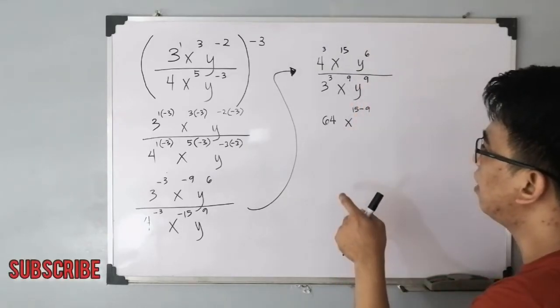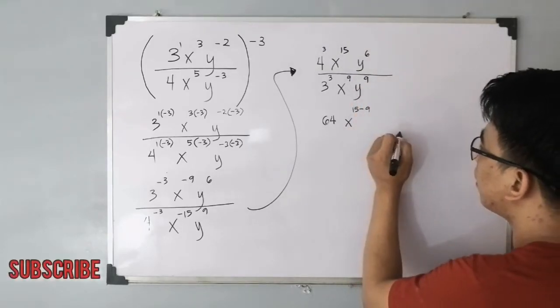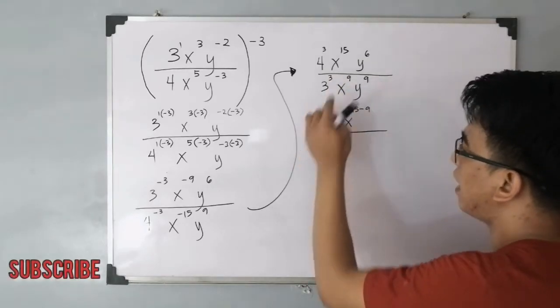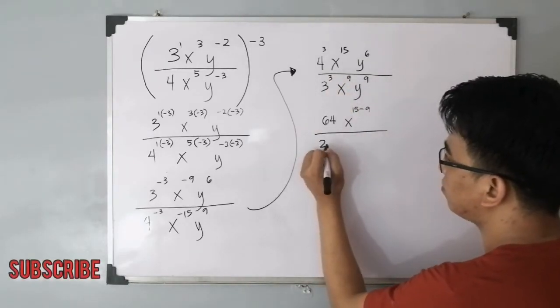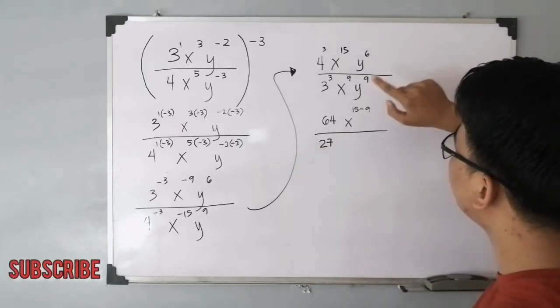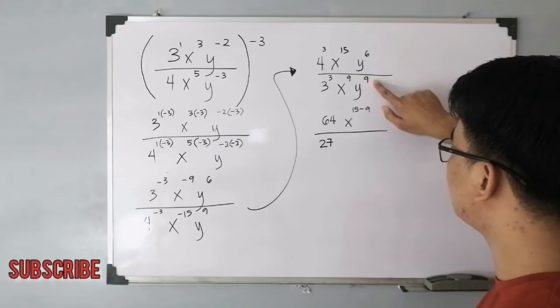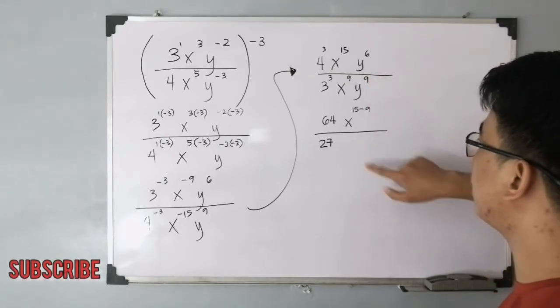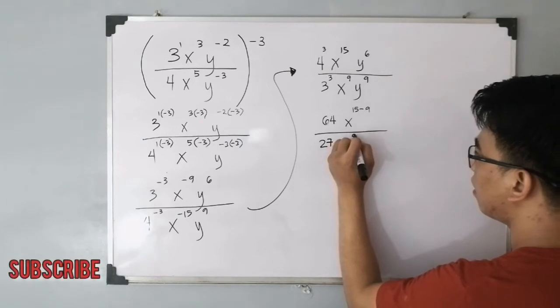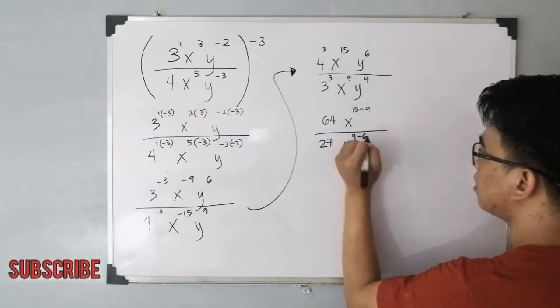Again, x raised to 15 minus 9 over yung 3 raised to 3 natin is equivalent to 27. For the y variable, papansin nyo, 9 is greater than 6. So dito mangyayari yung ating quotient rule. So you have y raised to 9 minus 6.